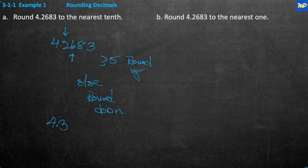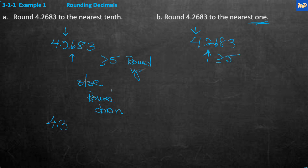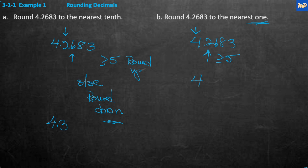Let's do B: round 4.2683 to the nearest ones place. The ones place is right here — the 4. We look to the right of the place we want to round to, and we ask: is the tenths digit greater than or equal to five? It's 2, which is not greater than or equal to 5, so we round down. The answer is just 4 — there are no numbers behind it.